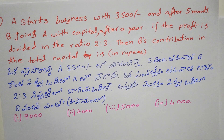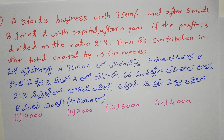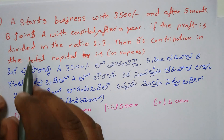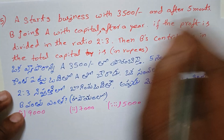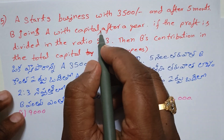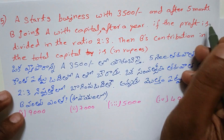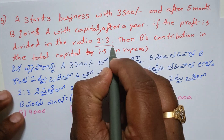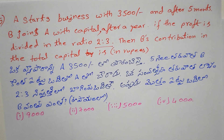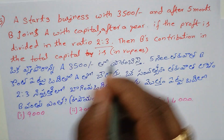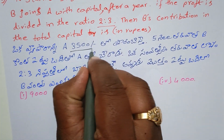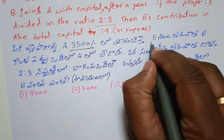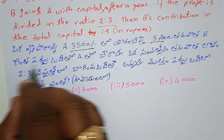Fifth question: A started a business with 3,500 rupees and after 5 months B joins A with some capital. After one year, if the profit is divided in the ratio 2 is to 3, then B's contribution in the total capital in rupees is what?